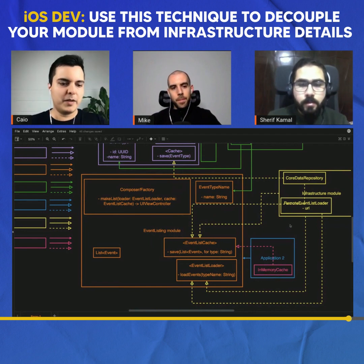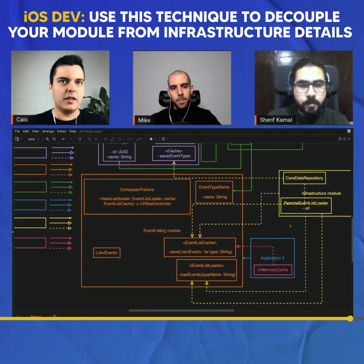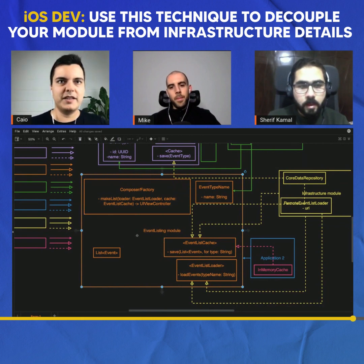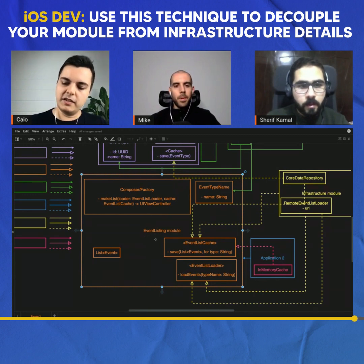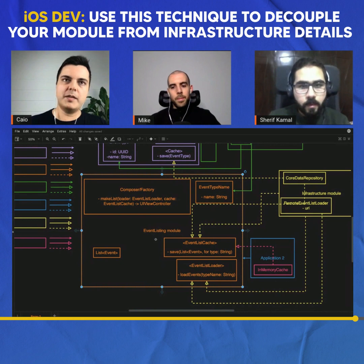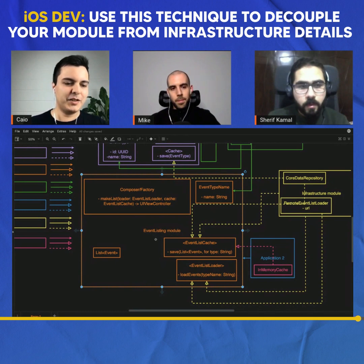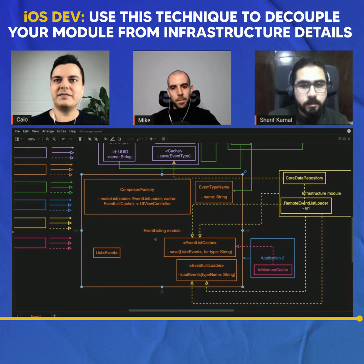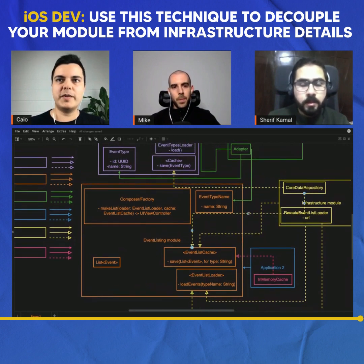This is all driven by requirements. If you have the requirement to separate infrastructure, that's fine. Otherwise, you can say this event listing is specific to this backend and keep the API implementation inside the module. But then if you want to use the same module with a different backend, you'll have more work to decouple it later. There is no perfect solution that works all the time.